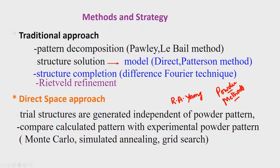I thought I would mention the possibility of determining the structure other than traditional methods, referred to as the direct space approach. Here we are directly trying to get a trial structure. The trial structures are generated independent of the powder pattern — we do not worry about the powder pattern. We can use techniques like Monte Carlo simulations, simulated annealing, grid search, and, of more recent origin, genetic algorithms.